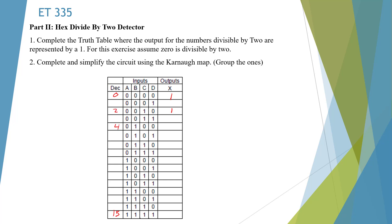So 2 would be divisible, 4, 6, 8, 10, 12, and 14. And all the rest of them are not going to be divisible, so they're going to be 0. And we can transfer these numbers to our Karnaugh map.